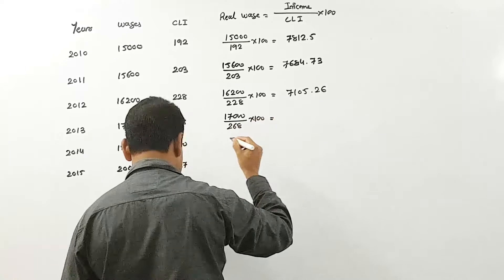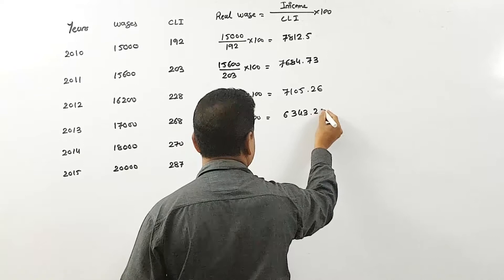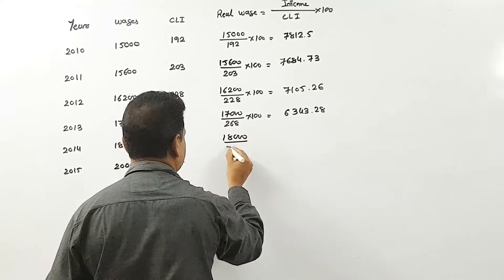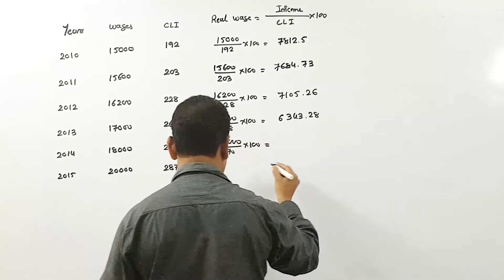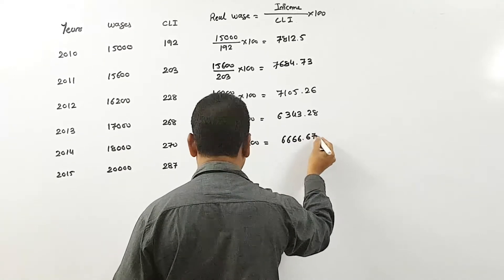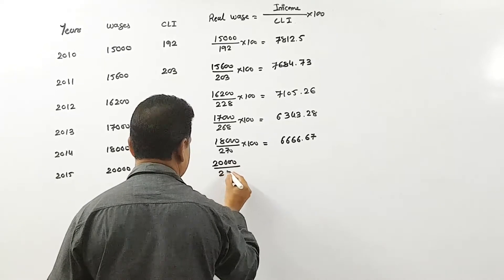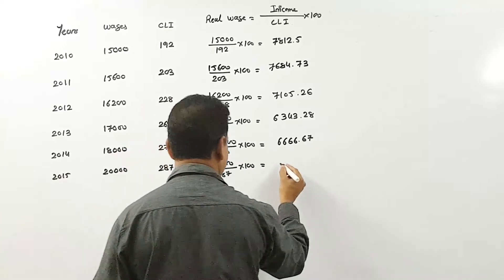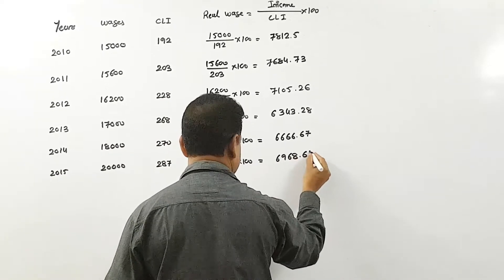For 2014: 18,000 divided by 270 into 100, giving 6,666.67. For 2015: 20,000 divided by 287 into 100, giving 6,968.64.